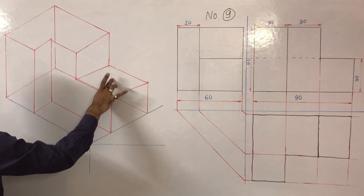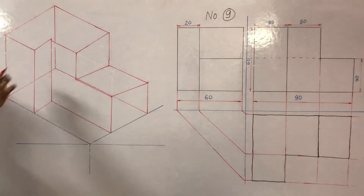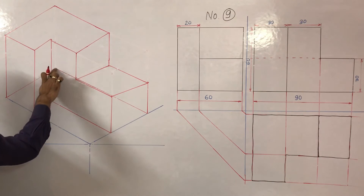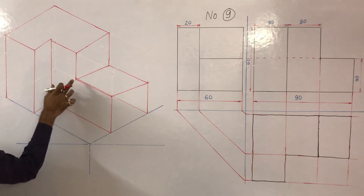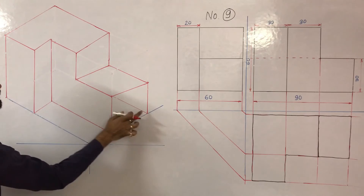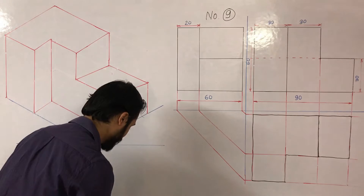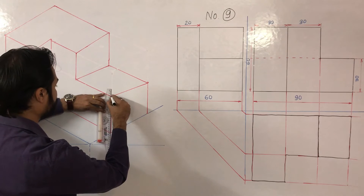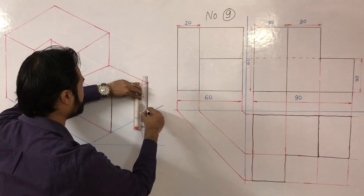After removing the upper part, this is the final view of the given machine block. You don't have to show hidden edges, so erase them. Use that pencil for the final view of the block.